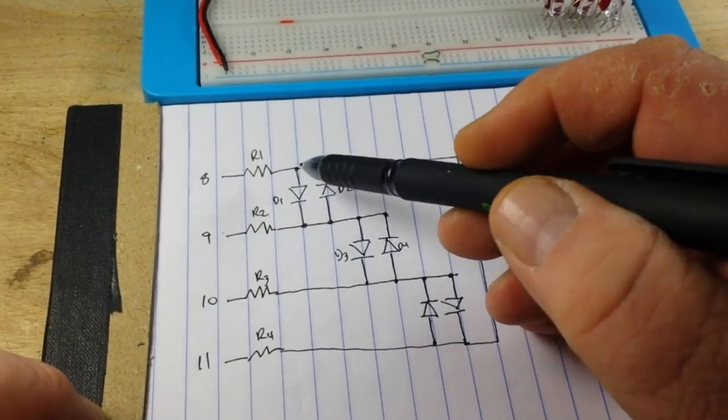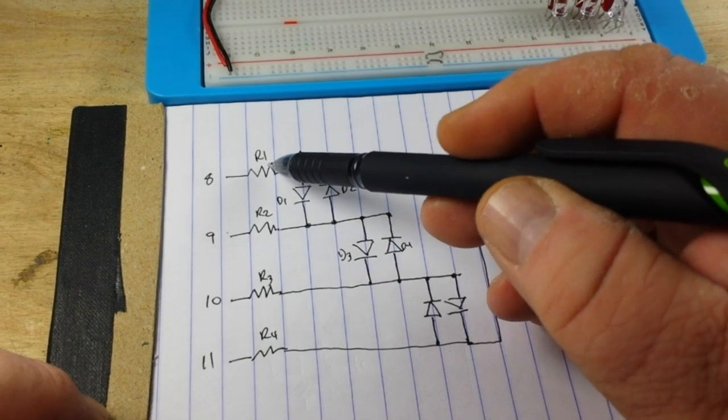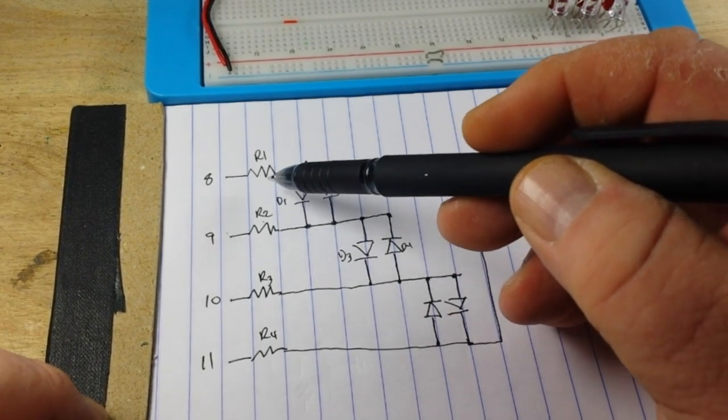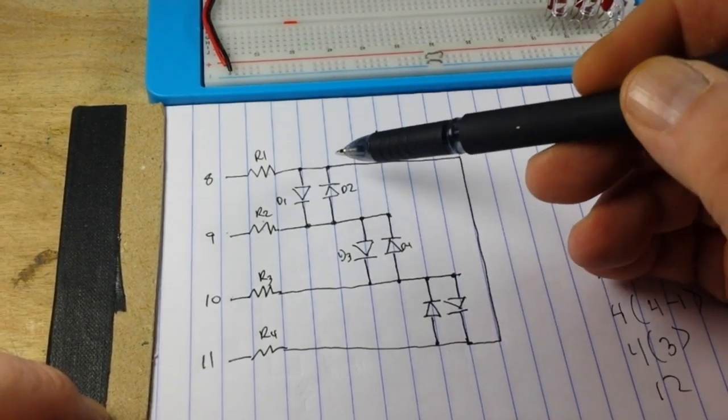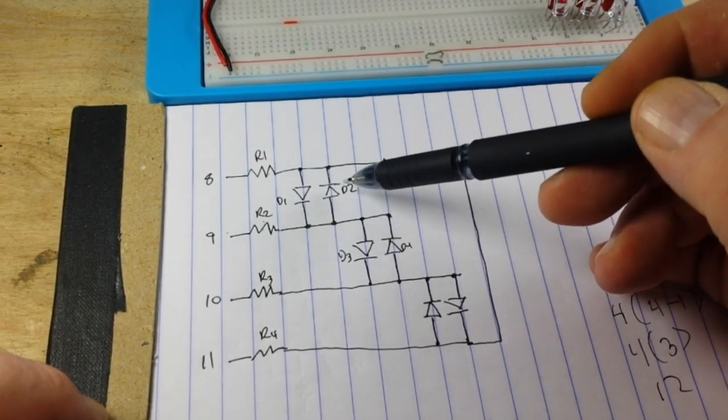So, D1 and D2 are connected between input 1 and input 2. We're going to call these resistors our inputs. So between R1 and R2, we connect D1 and D2 in opposite polarity.